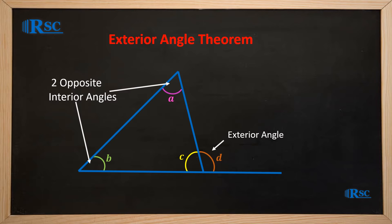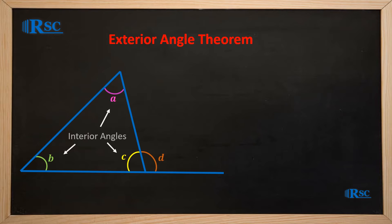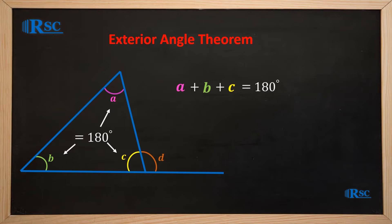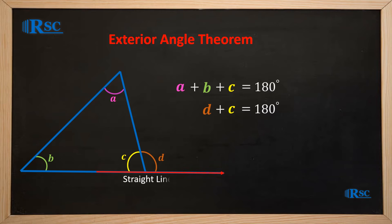We already know that the sum of the interior angles in a triangle is 180 degrees. That is, A plus B plus C is equal to 180 degrees. We also know that D plus C is equal to 180 degrees, as D and C lie on a straight line.